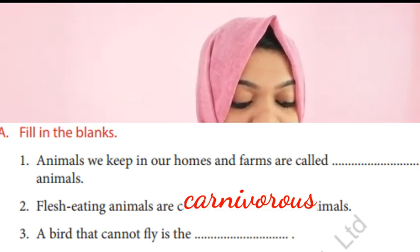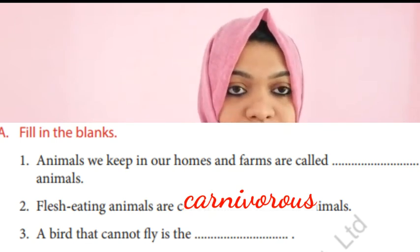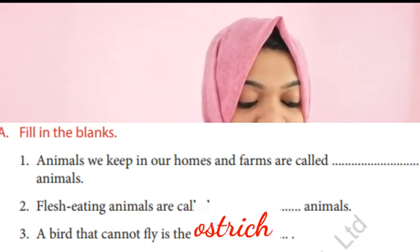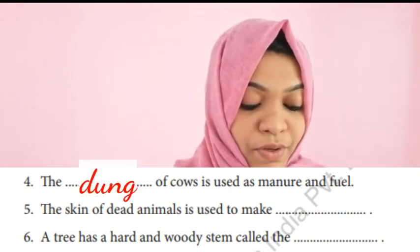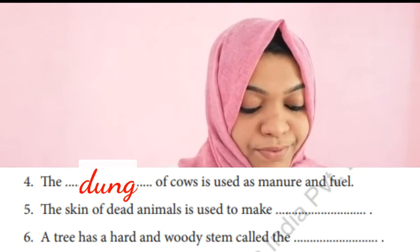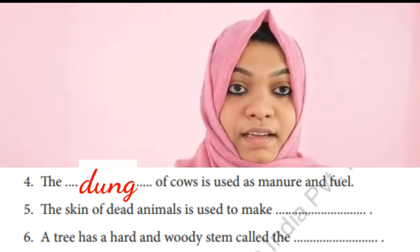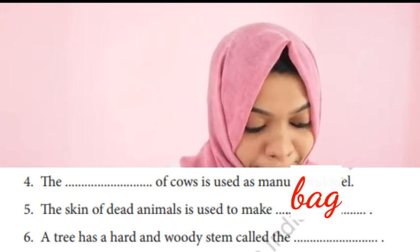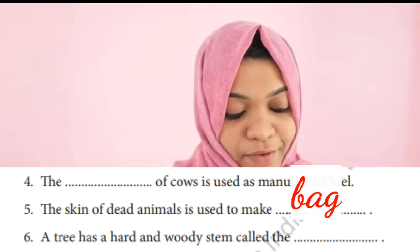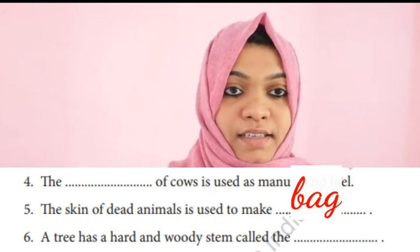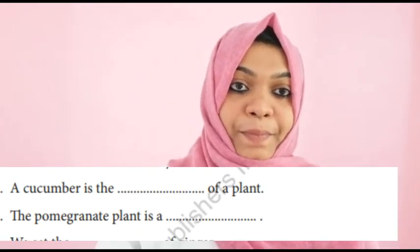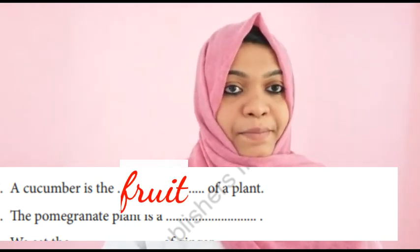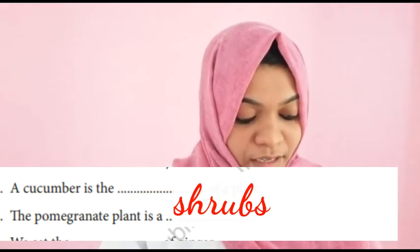A bird that cannot fly is the ostrich. The dung of a cow is used as manure and fuel. The skin of a dead animal is used to make bags. A tree has a hard and woody stem called trunk. A cucumber is a fruit of a plant. The pomegranate plant is a shrub. We eat the stem of ginger.